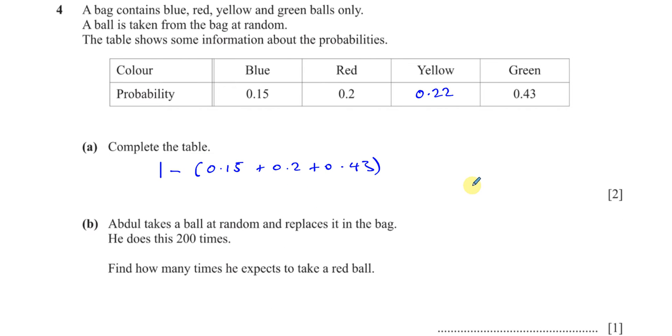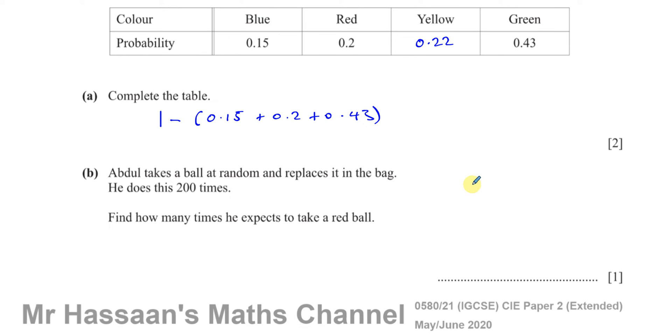Then part B says Abdul takes a ball at random. I'm going to change this to Abdullah—that's much more appropriate. Abdullah takes a ball at random and replaces it in the bag. He does this 200 times. Find how many times he expects to take a red ball.